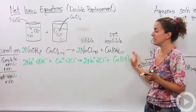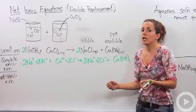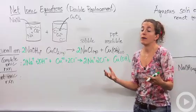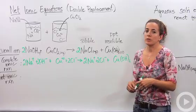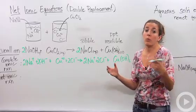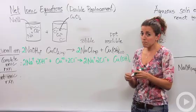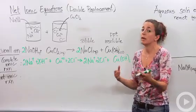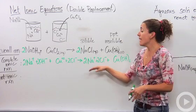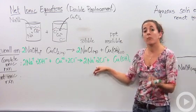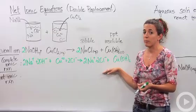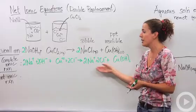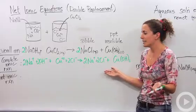Let's go into something called spectator ions. When you think of the word spectator, you might think of a basketball game — you're watching but not affecting the outcome. That's what spectator ions are. They're just watching the reaction take place; they don't really do anything and don't affect the outcome of the actual reaction. So what's a spectator ion? They are ions that appear on both sides of the reaction unchanged.